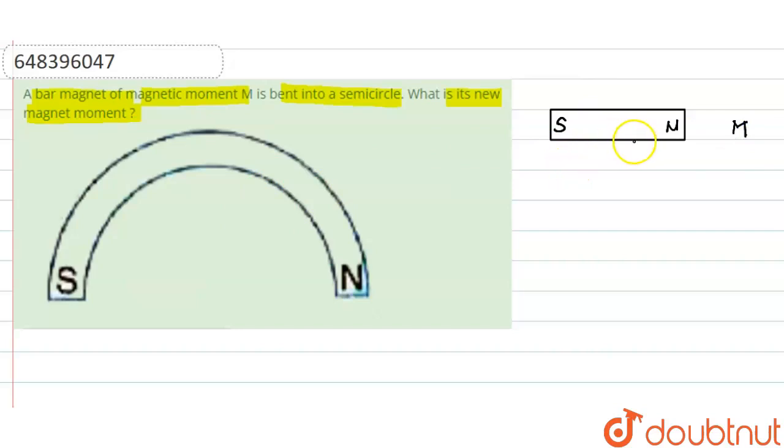the magnet was a rectangular bar magnet, its magnetic moment was capital M equals m times 2l,